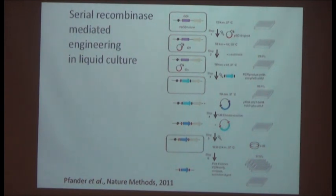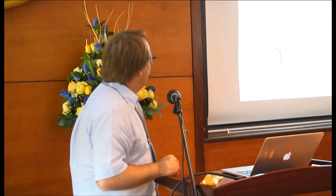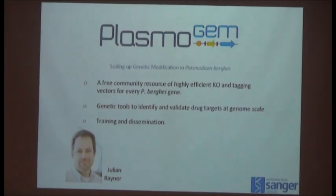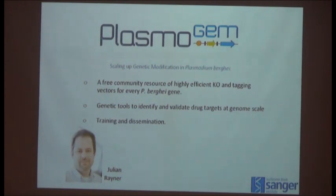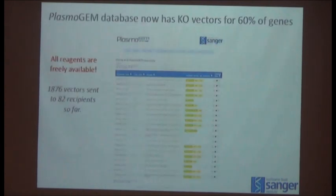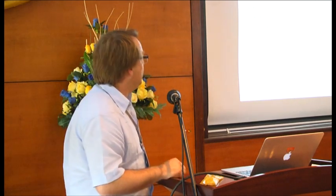We published this methodology and built a pipeline to make 96 knockout or tagging vectors for different genes every week. Together with my colleague Julian, we built the PlasmoGEM Resource — Plasmodium Genetic Modification project — a free community resource with highly efficient knockout and tagging vectors covering more than half of the genome. We produce toolkits to work with these vectors, train people, disseminate the technology, and have sent out hundreds of these vectors to labs worldwide.